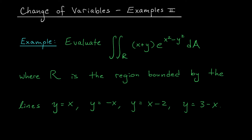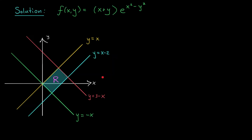Today we're going to be evaluating this nasty looking double integral over the region R bounded between the lines y equals x, y equals minus x, y equals x minus 2, and y equals 3 minus x. Here you can see I've sketched the four lines given in our question, and I've identified R as this parallelogram region in the middle.